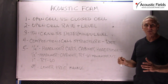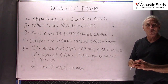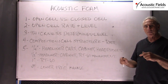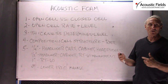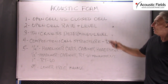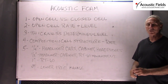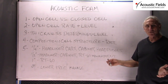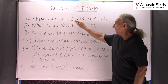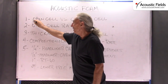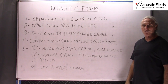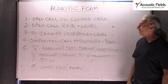Open cell foam is exactly what the name implies. The cells are open, which allows for air movement to get inside each cell, move around, create friction, transform to heat, and then we have the energy change. Closed cell foam is the kind of foam you use in seat cushions, pillows, your car seats. Open is something we use in acoustics; closed is something that you sit on — that's a good way to think about it.